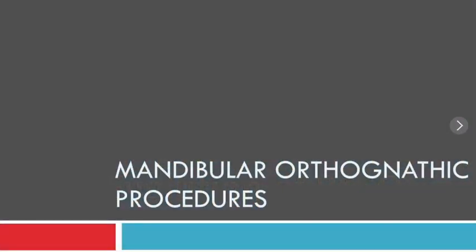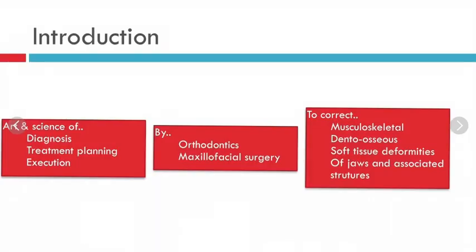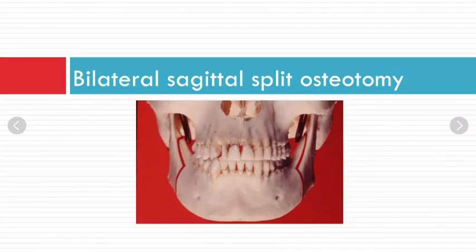Hello friends, I was getting requests for modifications of BSSO, so I'll do a video on this topic. I had difficulty learning the definition of orthognathic surgery, so here is a simple breakdown in three parts. Orthognathic surgery is the art and science of diagnosis, treatment planning, and execution by either orthodontics or maxillofacial surgery to correct musculoskeletal and osseous soft tissue deformities of the jaw and associated structures.